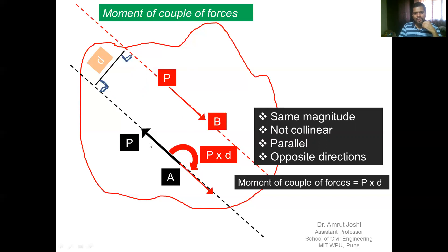If we remove force p at b and replace it with a force-couple system at a — a force of magnitude p and a couple moment of magnitude p times d — it is one and the same. The two equal and opposite forces at a nullify the tendency of translation, since the net force is zero. Only rotation results under the moment p times d. Since this moment p times d is the combined effect of both forces at a and b, we call it the moment of couple of forces.